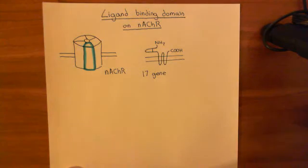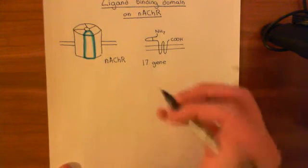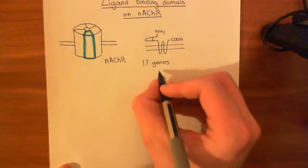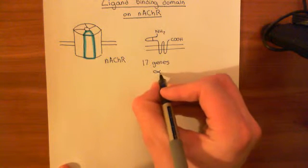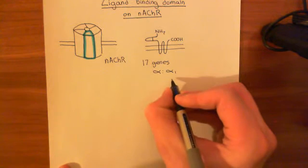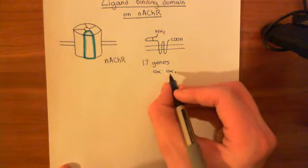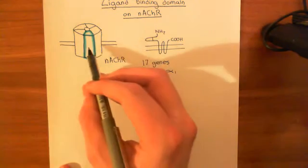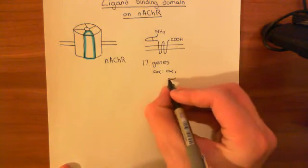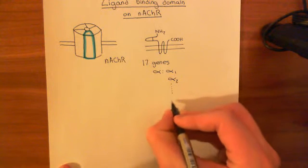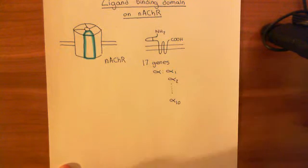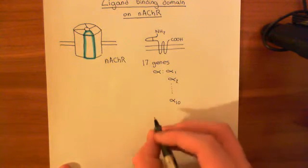To help us understand these 17 different genes, we have put them into families. We have the alpha subunits: alpha-1 is a gene which codes for a protein that can be used as one-fifth of a nicotinic acetylcholine receptor, and it continues on — alpha-2 all the way down to alpha-10. So overall, there are 10 genes of the 17 that are all in this alpha family.